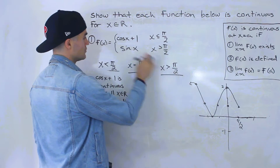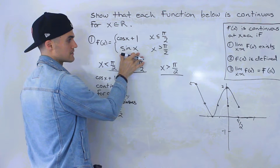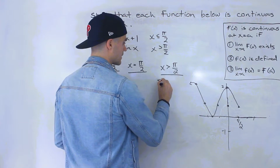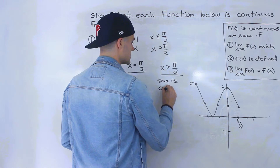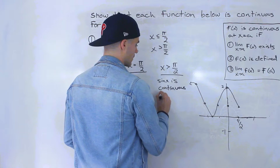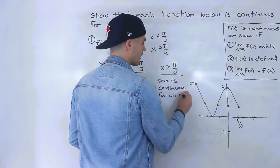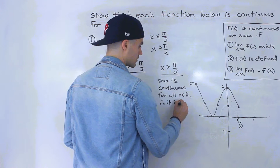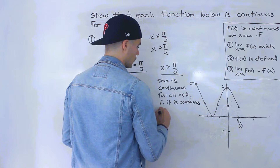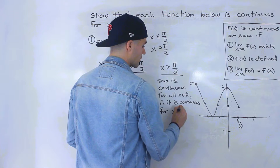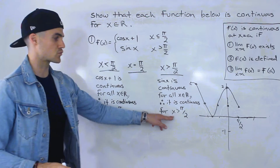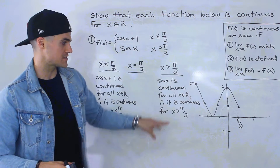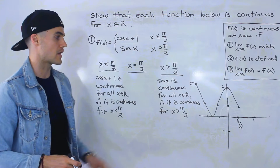Now when x is greater than π/2, notice that this piecewise function is defined by sin(x). And sin(x) is continuous for all x∈ℝ. Therefore it is also continuous for x values greater than π/2, because all x values greater than π/2 are encapsulated within x∈ℝ.